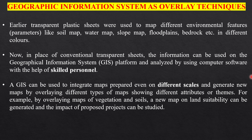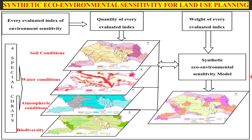For example, by overlaying maps of vegetation and soil, a new map on soil or land suitability can be generated and impacts of a proposed project can be studied.